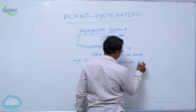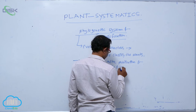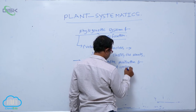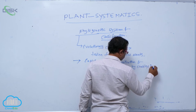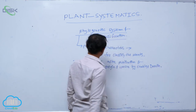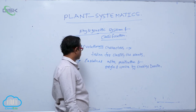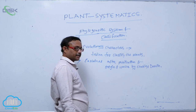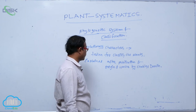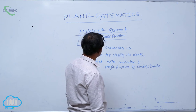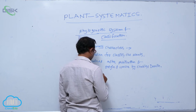After publication of Origin of Species by Charles Darwin, evolutionary characters are taken for classifying the plants. This phylogenetic system of classification is also described as post-Darwinian classification.